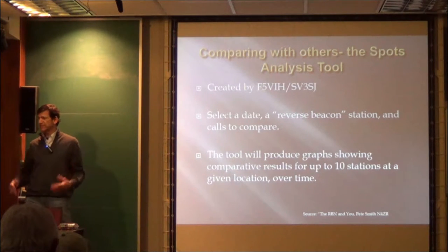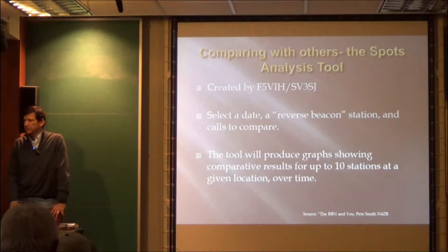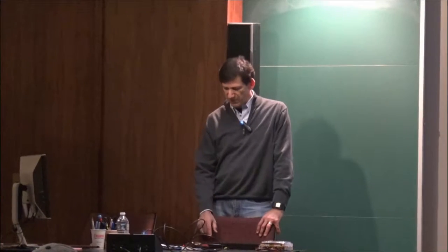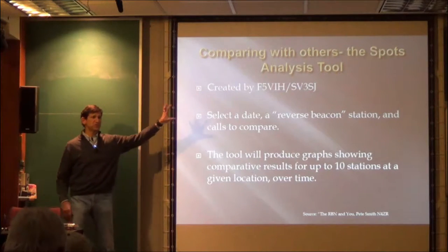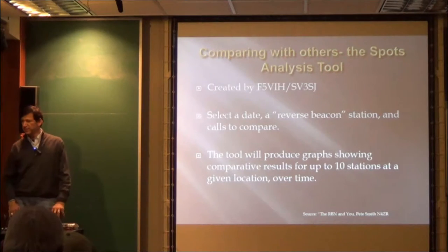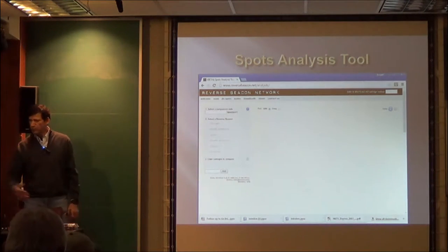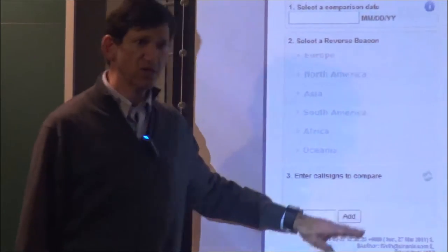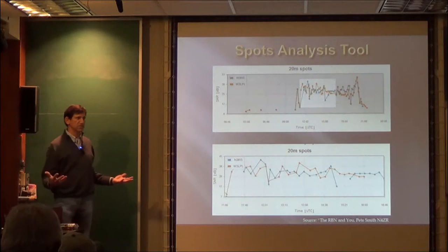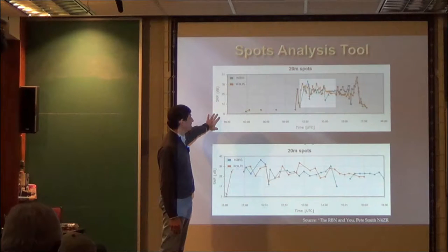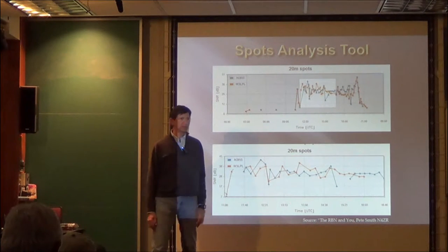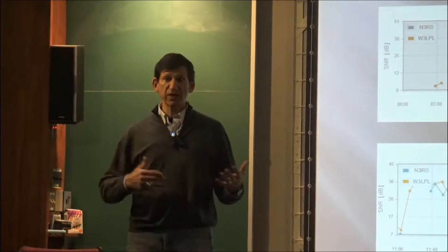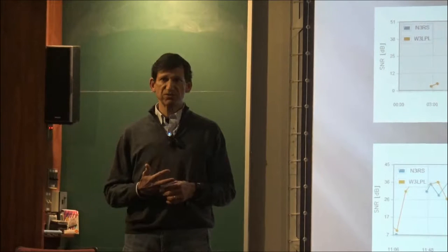Now, there's a tool called the Spots Analysis Tool. It was created by these guys. And basically, you select a date, the stations to compare, and the tool will produce graphs showing comparative results for up to 10 stations. And that's also from the Reverse Beacon Network. It's just you pull down the menu to the Spots Analysis Tool. And when you do that, you get into the tool here. You'll enter your date. You'll enter a call sign to compare. You could add up to 10 call signs. And then you do a run. And when you're done, you get an output that looks like this. So this is very nice for comparing, in my case, if I went out on a SOTA expedition with another station, and I wanted to compare the performance of our stations, I could do that.